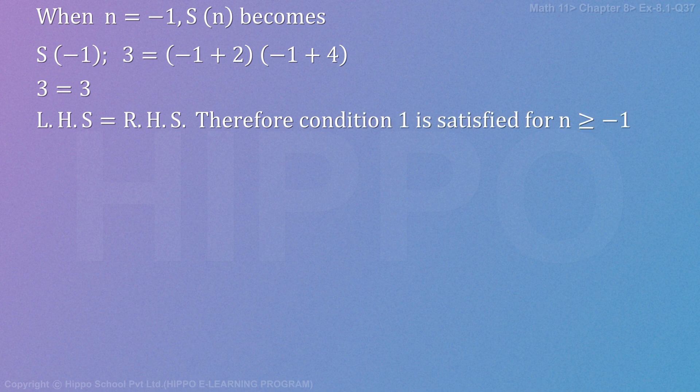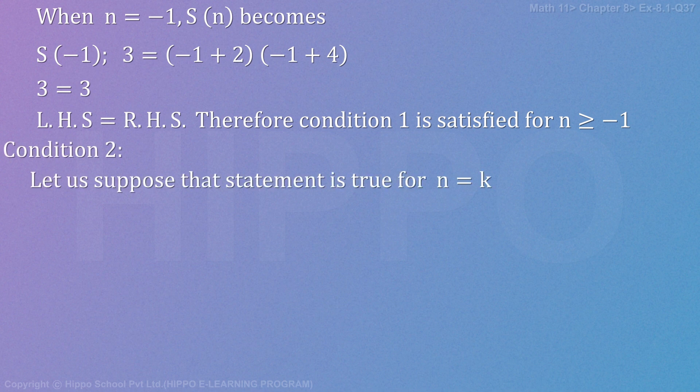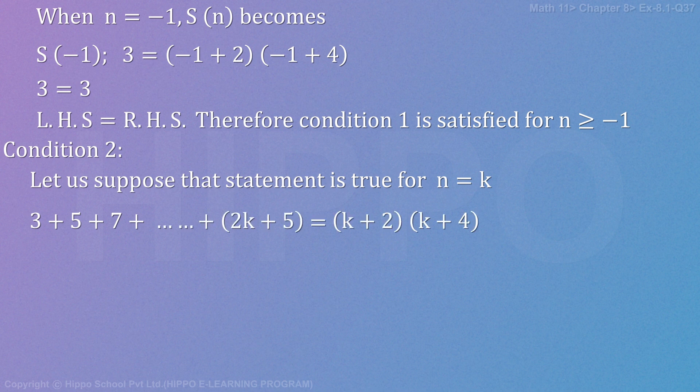Therefore condition 1 is satisfied for n greater than equal to minus 1. Condition 2: Let us suppose that statement is true for n equals to k. So 3 plus 5 plus 7 plus so on plus 2k plus 5 equals to k plus 2 times k plus 4.